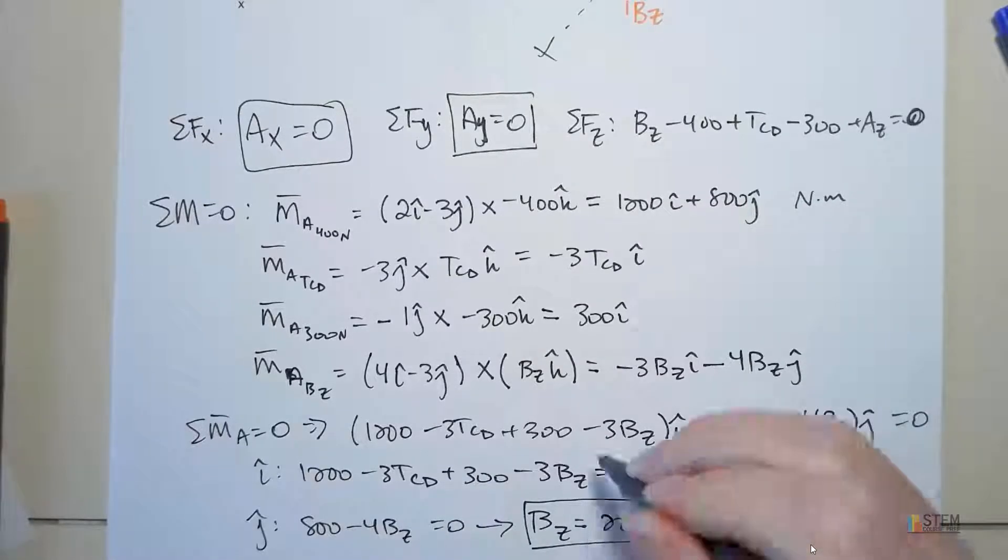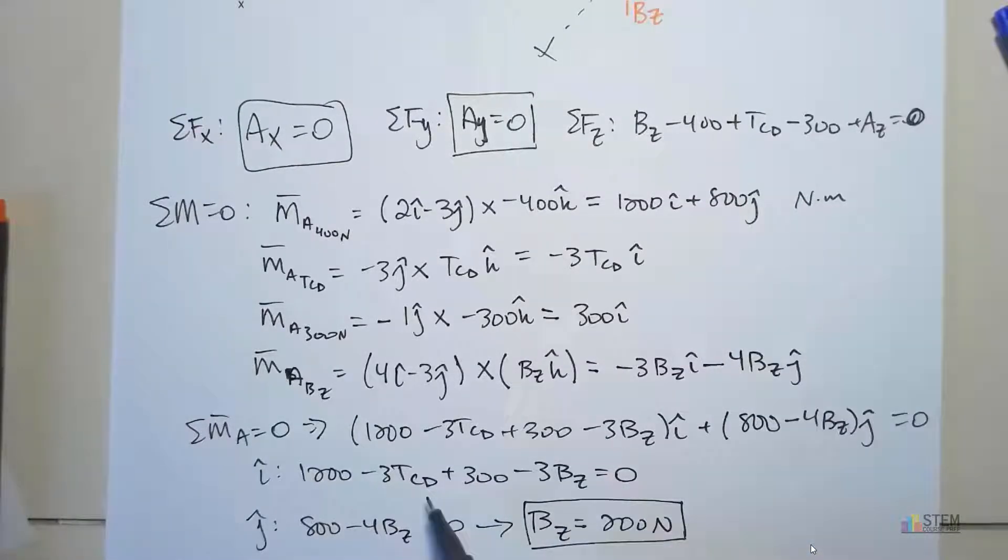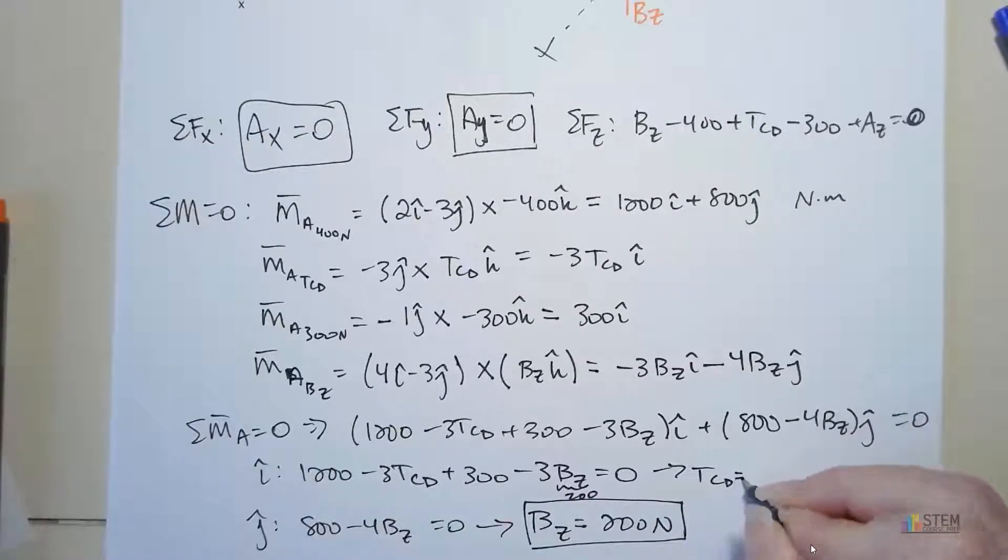Now you're just going to work your way back up. This equation has BZ and TCD in it. Plug in the 200 for BZ, you can solve for TCD. What do we get for tension? We get 300.